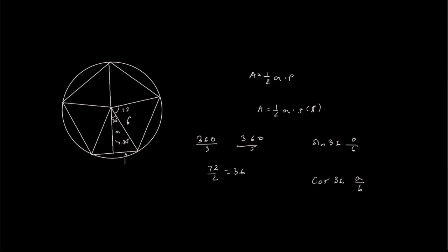Same thing, we input sine of 36, multiply by 6, and we get a value of 3.53. So we know this is 3.53.